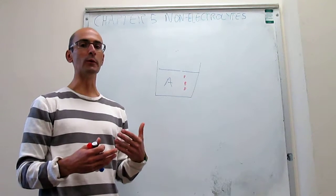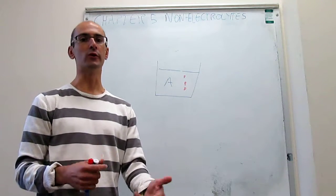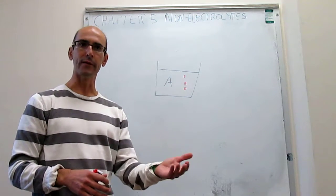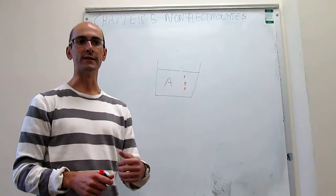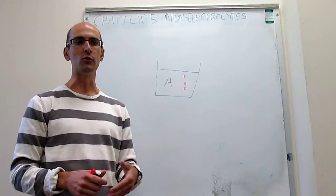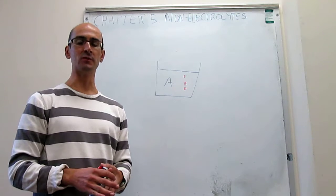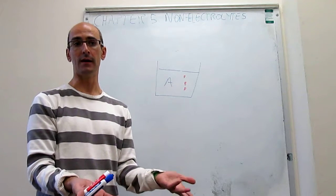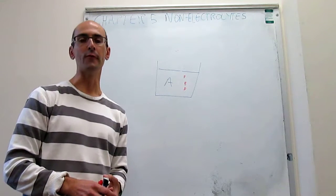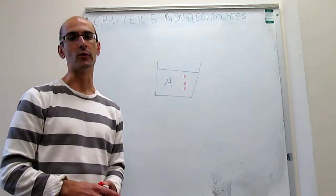A non-electrolyte is a substance that does not form any ions in solution. For example, we will be looking at solutions of glucose in water, ethanol in water, glucose in ethanol, or benzene and toluene. When you mix these in solution, no ions are formed—that's what we call non-electrolytes.